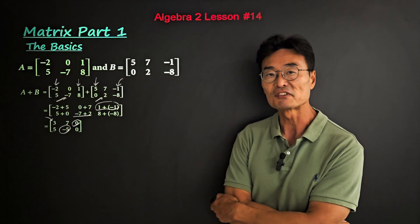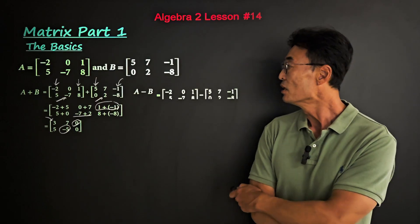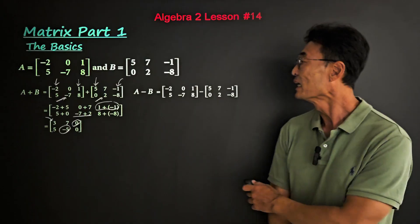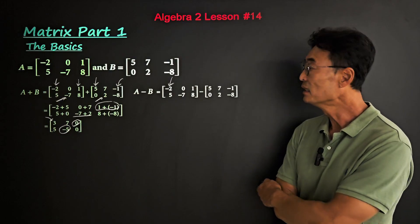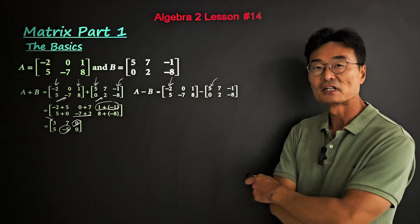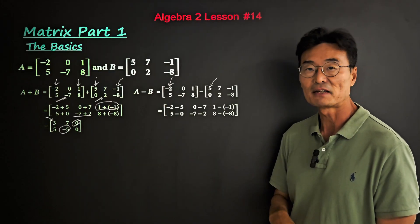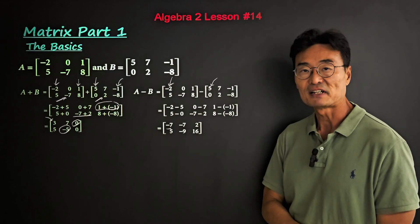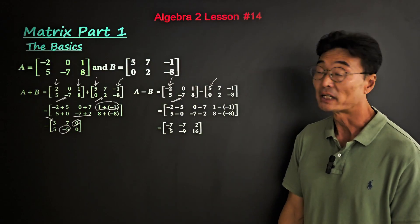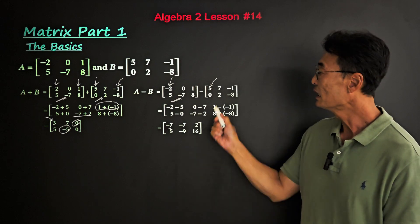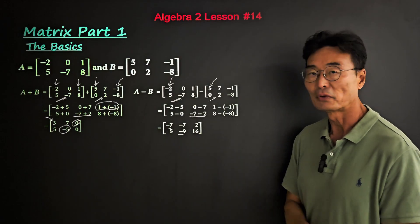Here's another example where we subtract the matrices. If we wanted to subtract matrix A and matrix B, we will set up the question like this, and we would again take the first row, first column number from matrix A and subtract the first column number from matrix B, where we go negative 2 minus 5 and end up with negative 7. Likewise, we could take negative 7 from the second row, second column, and 2 from the same position in matrix B, subtract, and end up with negative 9.